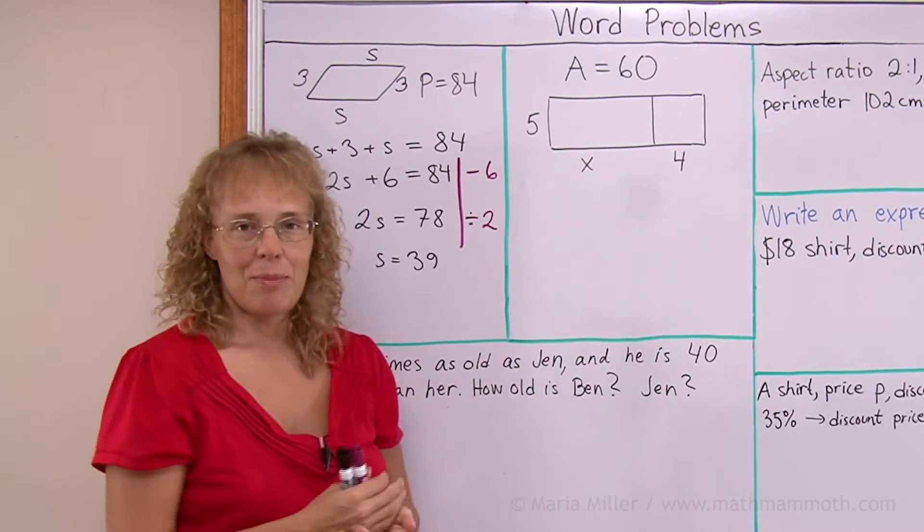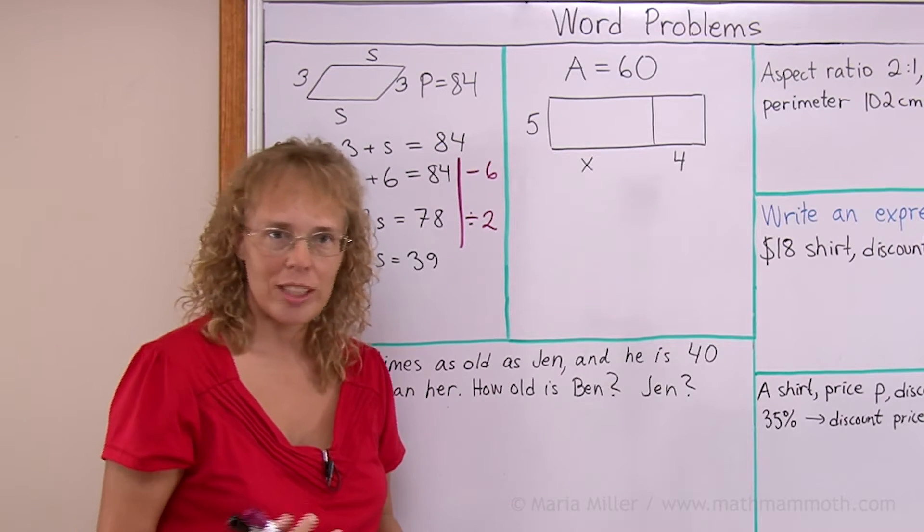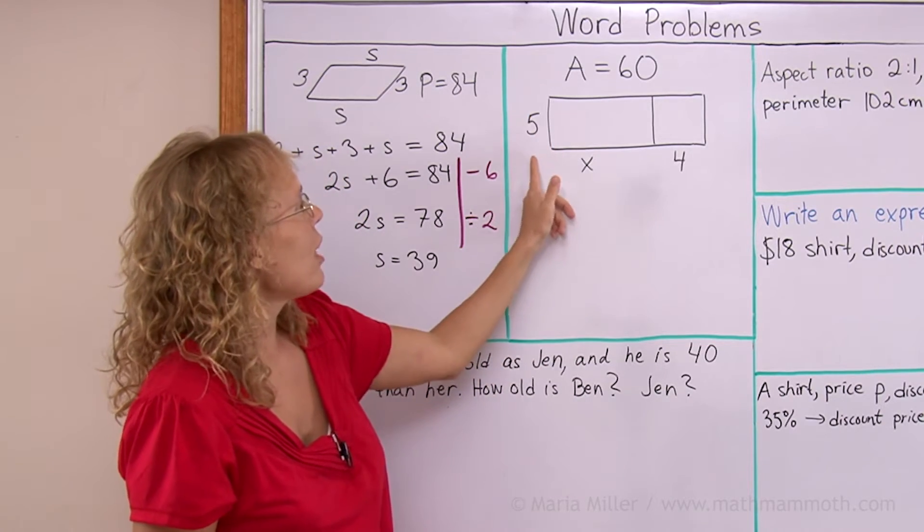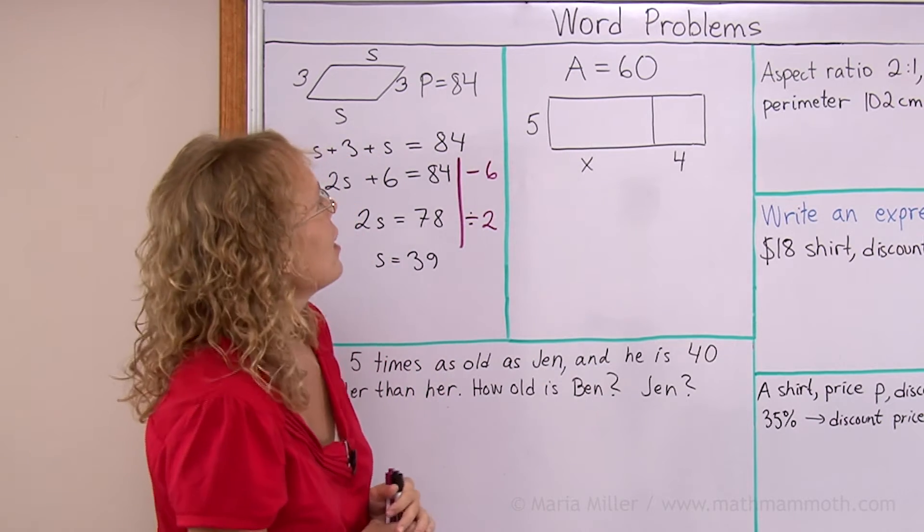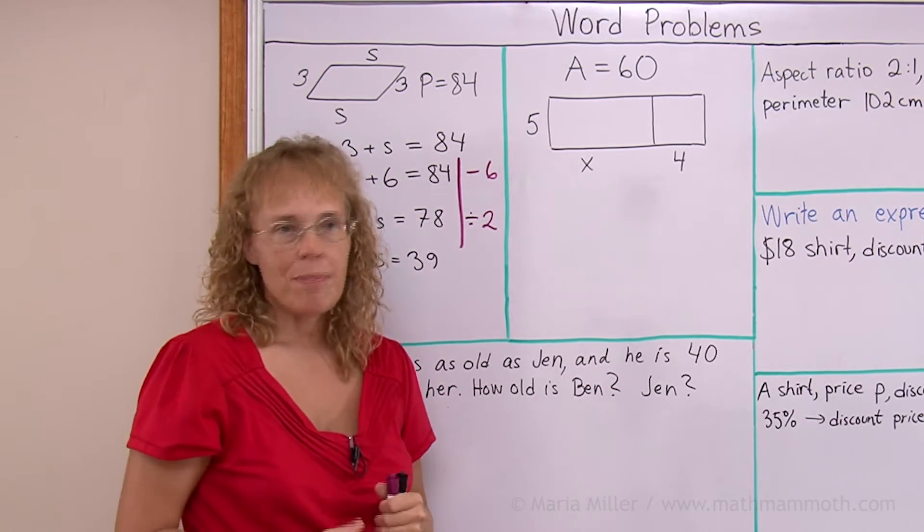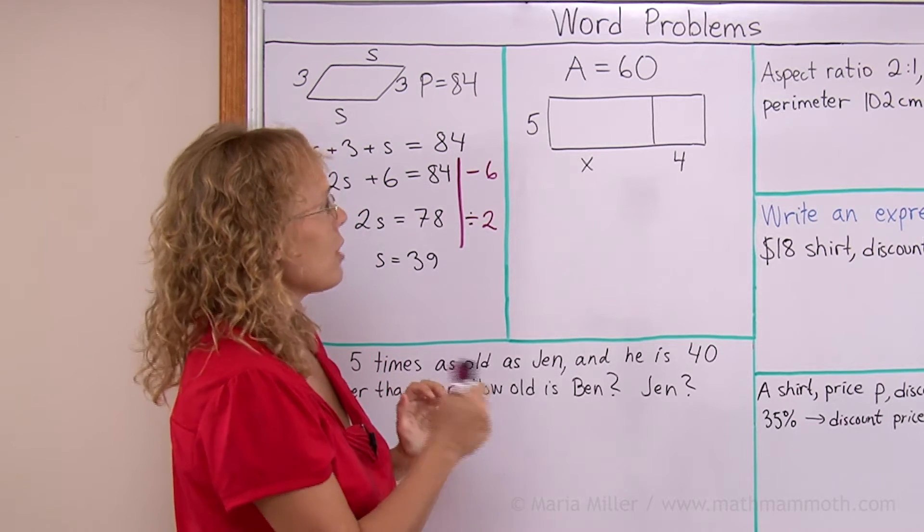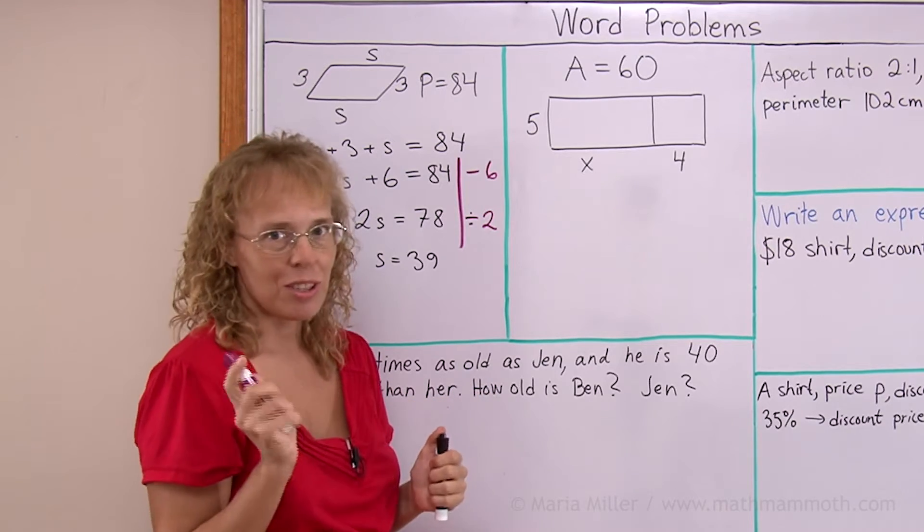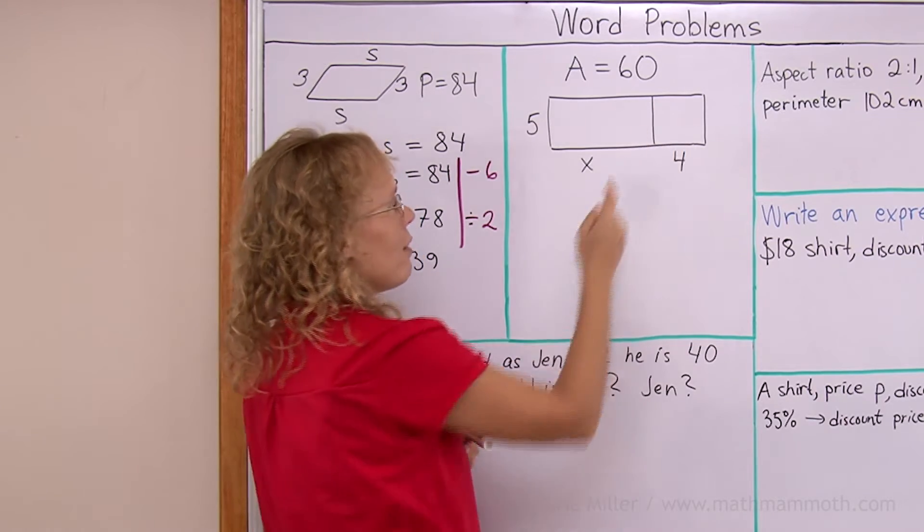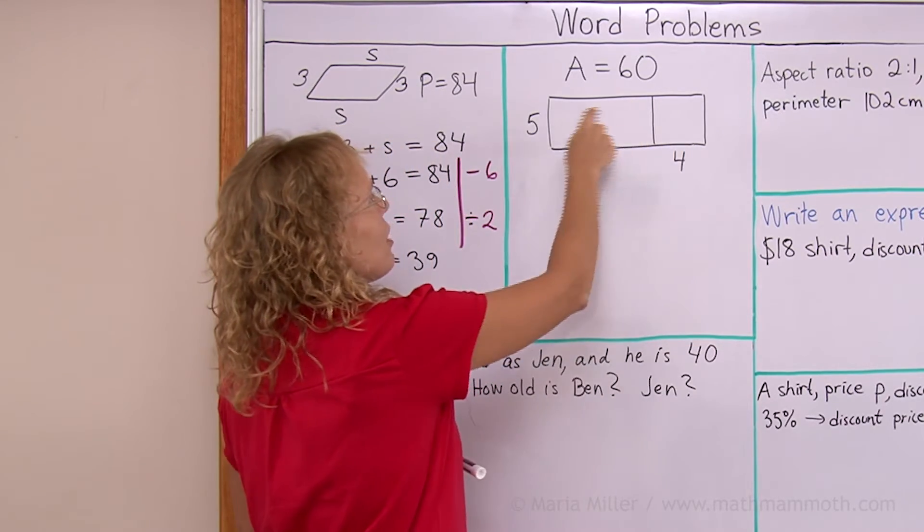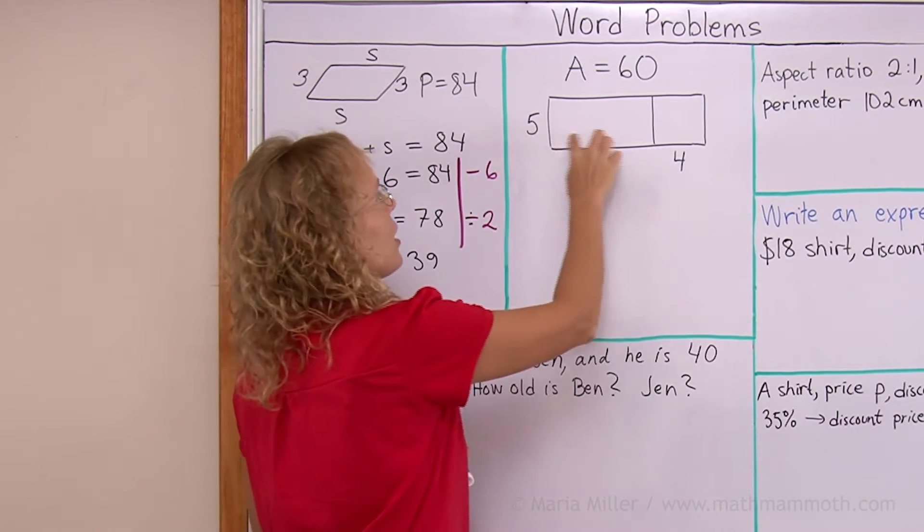In this one, A means area. The area of this whole long rectangle is 60 square units. This side measures 5. This side here is x units and then 4 units. We need to find x. And we can write an equation and solve it. You can also do it without equation solving. If you want to solve this without using an equation, let me do that real quick. You can find out that the area of this part here is 4 times 5. It's 20 square units. So therefore, this one alone must be 40 square units.